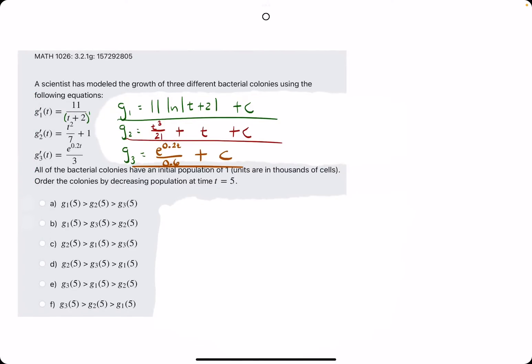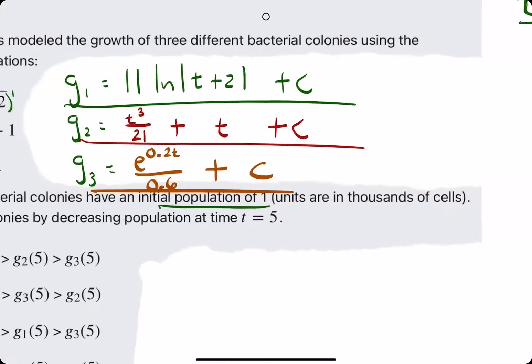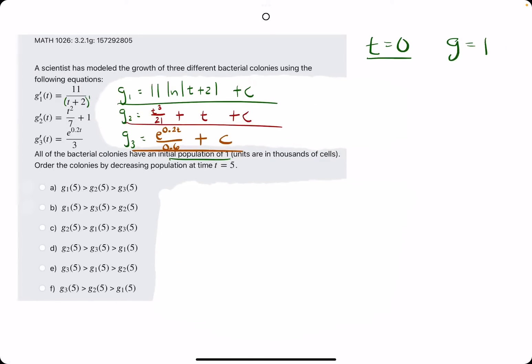Now, we use the initial population of 1 to solve for c for all 3 of these functions. The word initial means t equals 0, and the population means that g equals 1 for all 3 g's. But we have to solve for c separately for each one because we might get different c values.